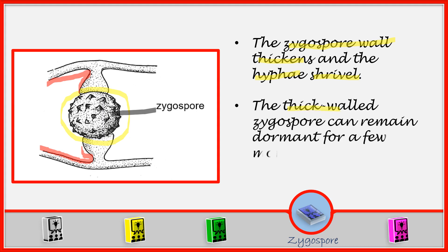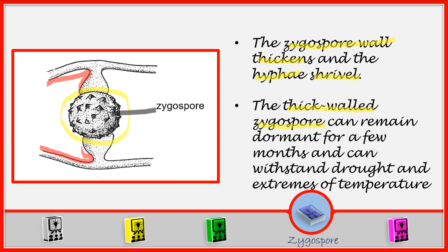The thick walled zygospore can remain dormant for a few months and can withstand drought and extreme temperatures. So it can stay here for a longer period of time or months and can withstand drought and extreme temperature.